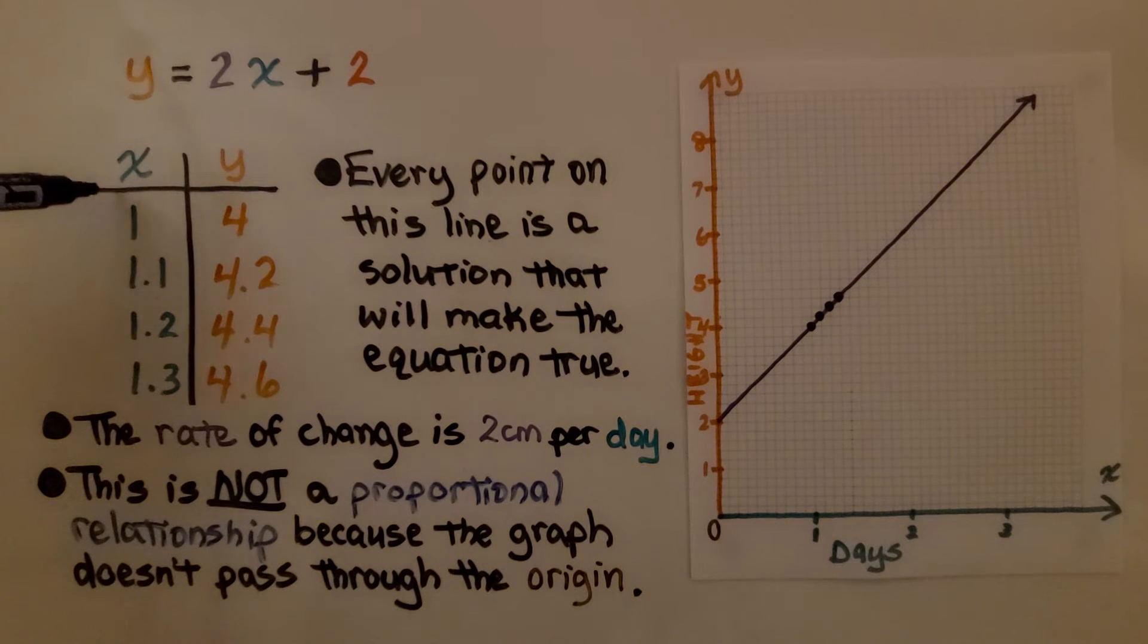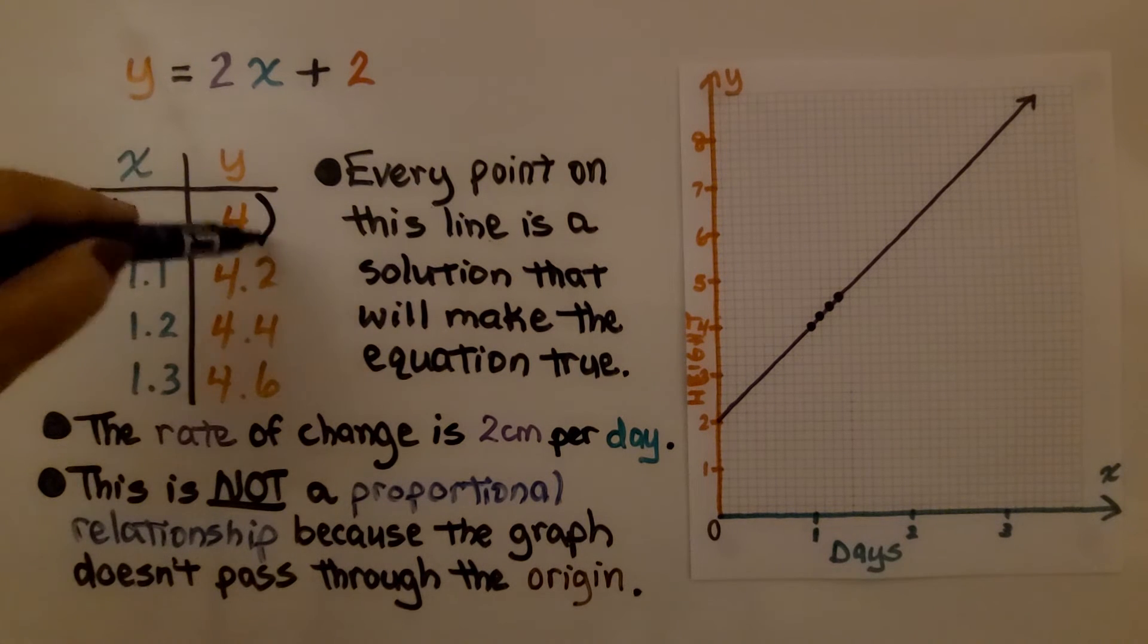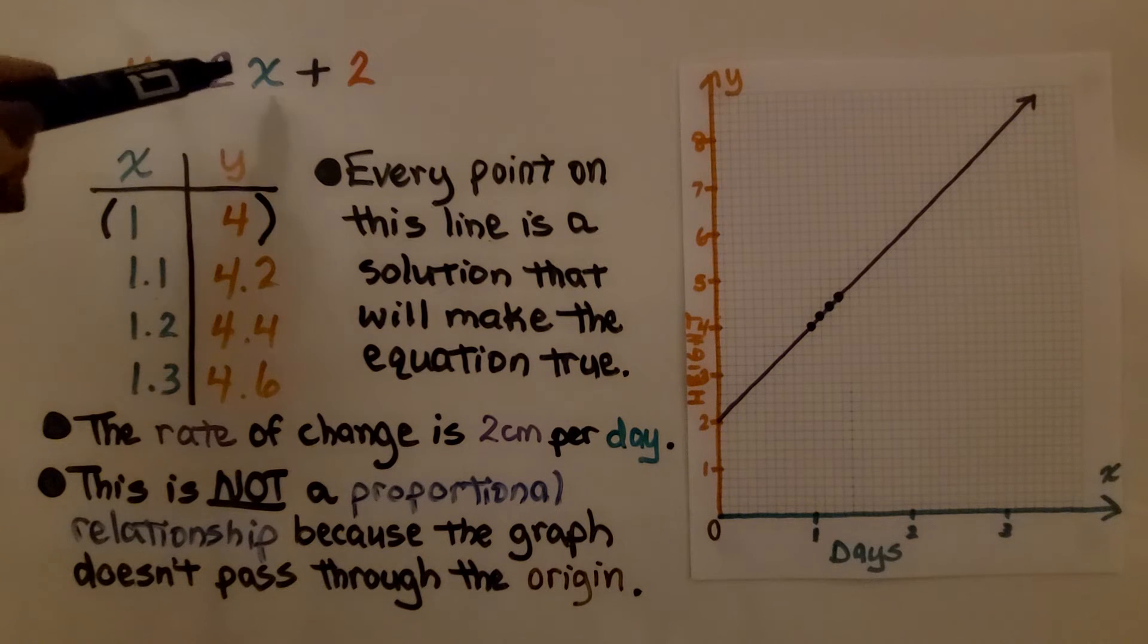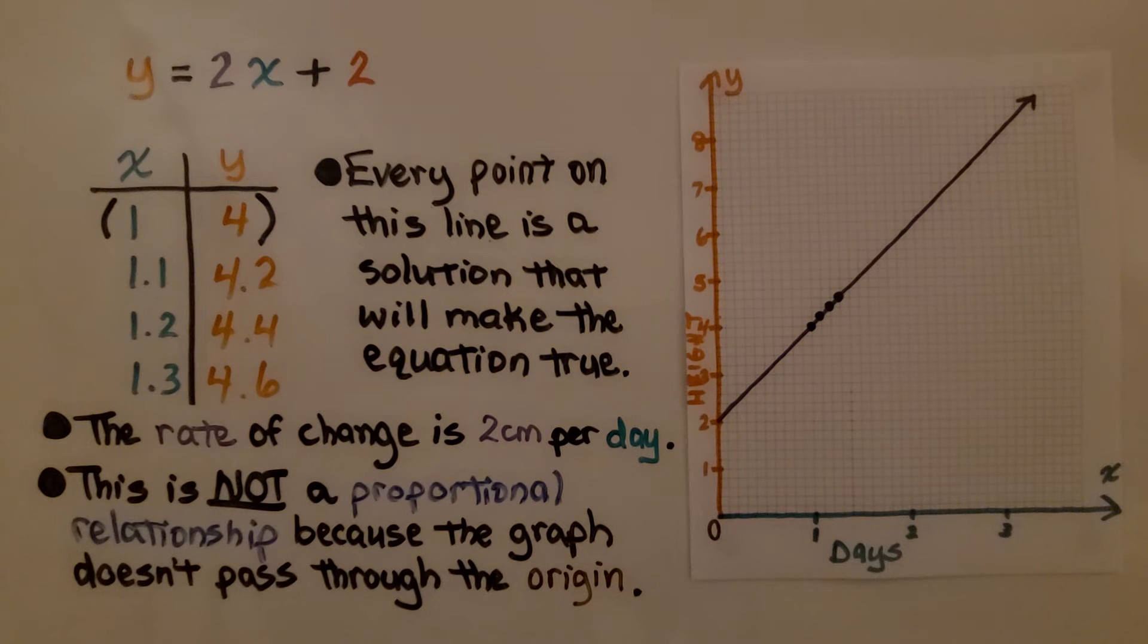Making the vertical table of values, we have each of our ordered pairs. Every point on this line is a solution that would make the equation true. The rate of change is 2 centimeters per day, but this is not a proportional relationship because the graph doesn't pass through the origin. It doesn't pass through (0,0).